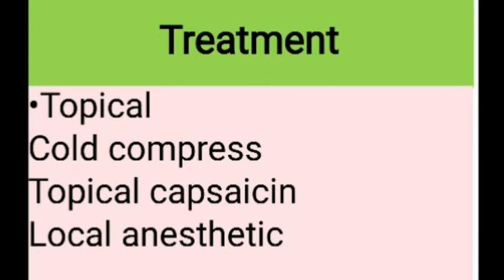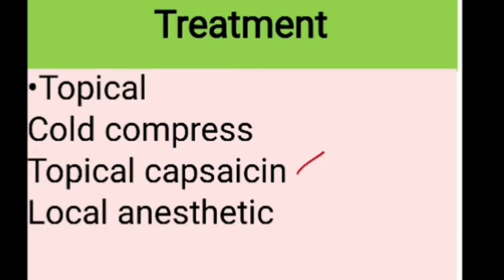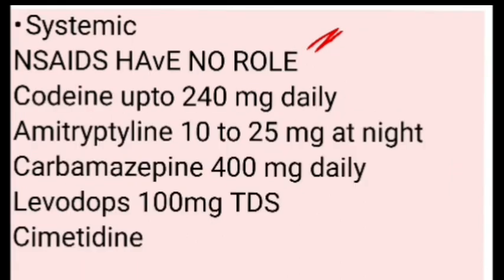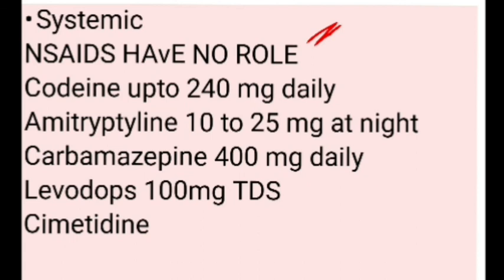Treatment of post-herpetic neuralgia is challenging. Topical options include cold compresses and topical capsaicin, which depletes substance P thereby reducing pain, and local anaesthetic lidocaine 5% cream. Systemic options include codeine up to 240 mg daily, amitriptyline starting at 10 to 25 mg at night and increasing up to 75 mg, carbamazepine 400 mg daily, levodopa 100 mg three times daily, and cimetidine. NSAIDs have no role here.